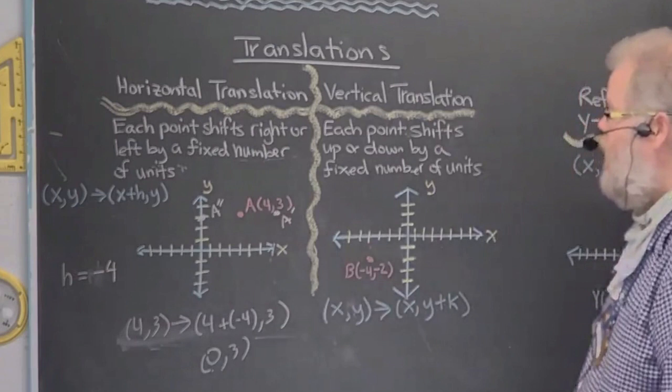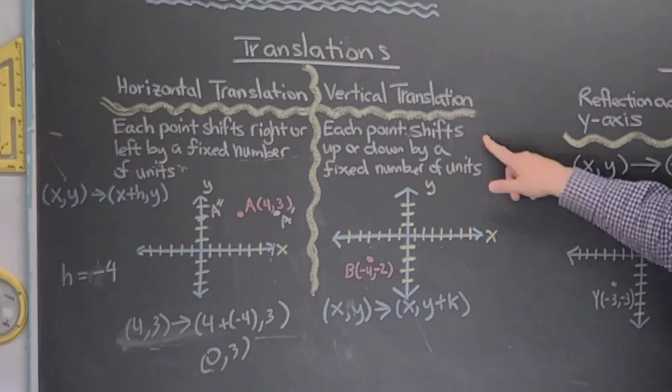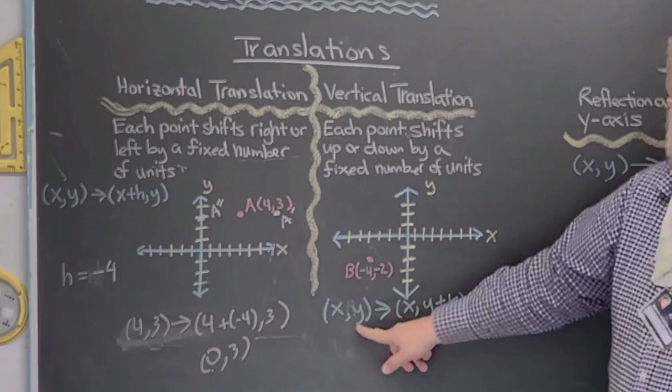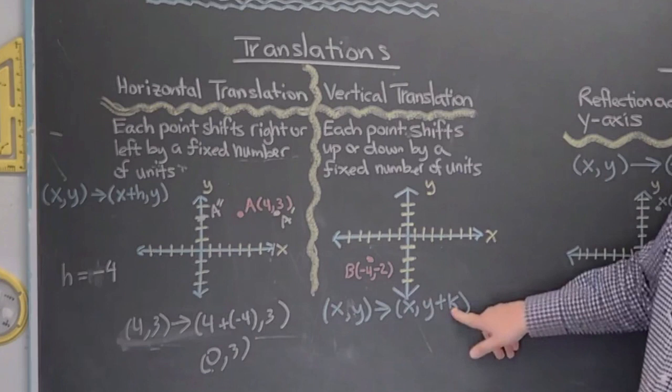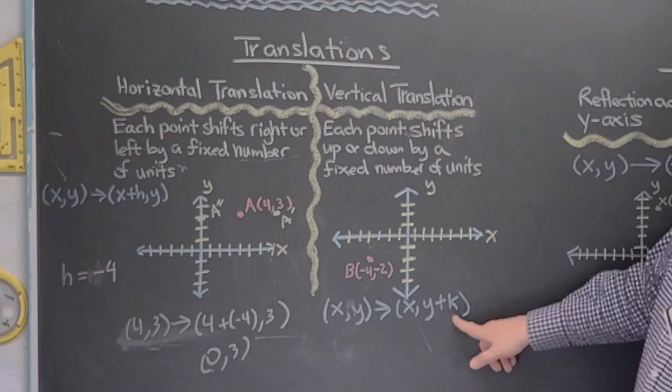Vertical translations: each point shifts up or down by a fixed number of units. The ordered pair (x, y) translates into a new ordered pair x comma y plus K. If K is positive, this is a translation up. If K is negative, this is a translation down.